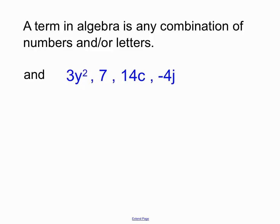Now there can be a wide variety, there are four terms here, they're all algebra terms. We have 3y squared, we have a normal 7, 14c, and another negative term, minus 4j.